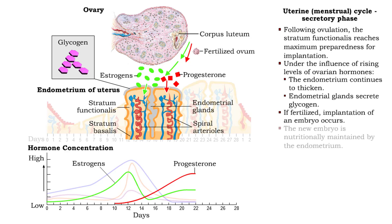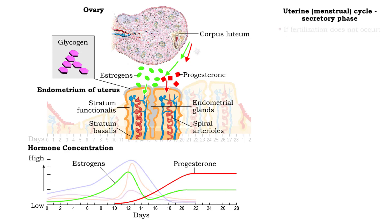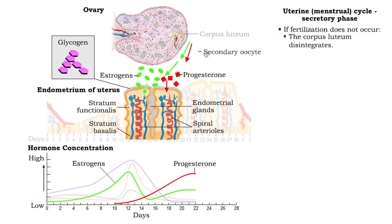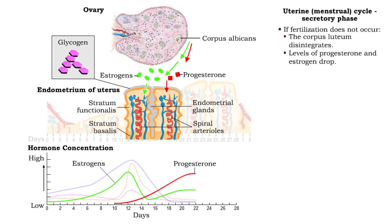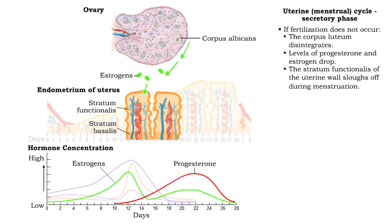If fertilized, implantation of an embryo occurs and is nutritionally maintained by the endometrium. If fertilization does not occur, then the corpus luteum disintegrates. Levels of progesterone and estrogen drop, and in response, the stratum functionalis of the uterine wall sloughs off during menstruation.